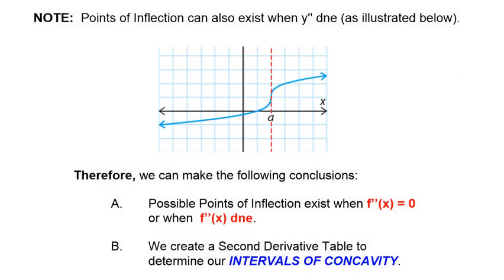A point of inflection can also occur when the second derivative does not exist. Consider a graph with a vertical tangent — it cannot be derived at that point. Does that mean there's no point of inflection? There still is one. So we must conclude that a point of inflection can exist when the second derivative is zero or when the second derivative does not exist. We have to look for that as a possibility.